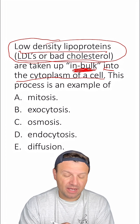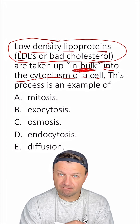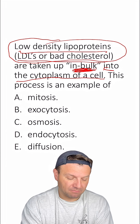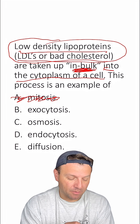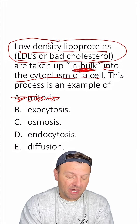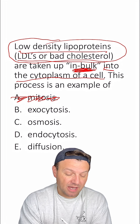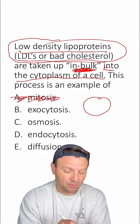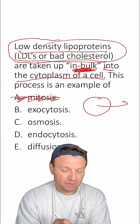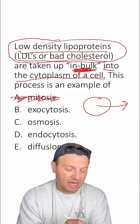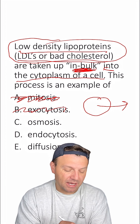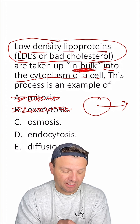Let's look at our answers. A, mitosis — that's cell division, not even a type of cell transport, so that's out. B, exocytosis — that is active transport, but that's when things move out of the cell, so that can't be the answer. Exo meaning exiting.